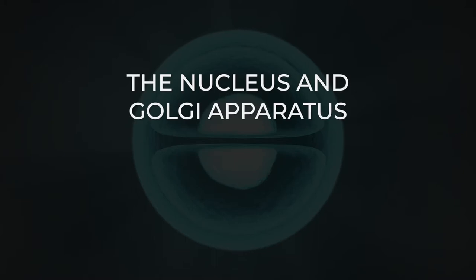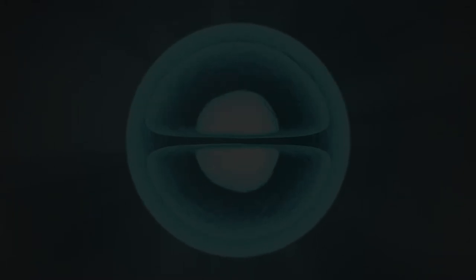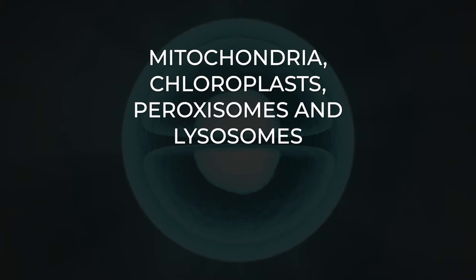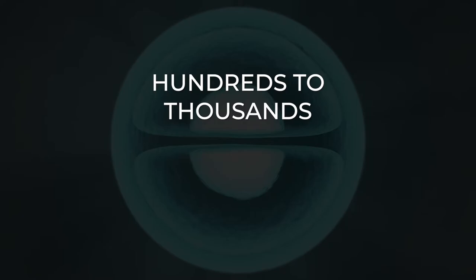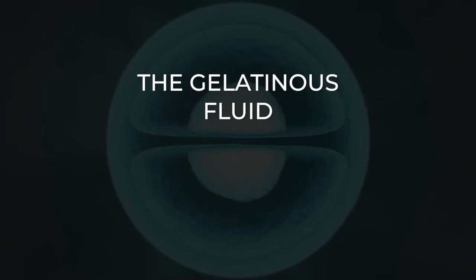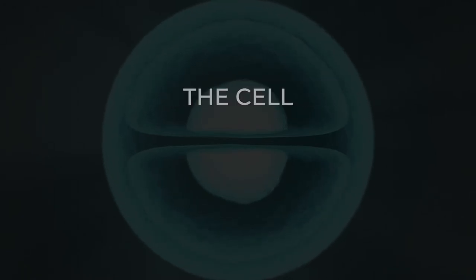Some, such as the nucleus and Golgi apparatus, are typically solitary, while others, such as mitochondria, chloroplasts, peroxisomes and lysosomes, can be numerous, hundreds to thousands. The cytosol is the gelatinous fluid that fills the cell and surrounds the organelles.